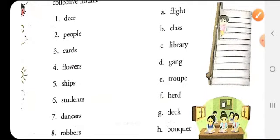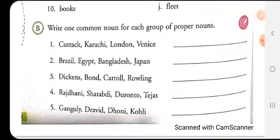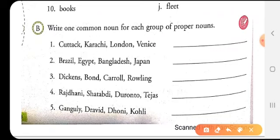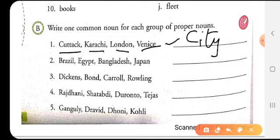Let's see what we have next. Now in this question, here are some groups of proper nouns given and we have to write the common nouns here. The first question we have is names like Cuttack, Karachi, London, Venice. So what are these? They are the names of cities. So we will write the common term city for all these groups of proper nouns.